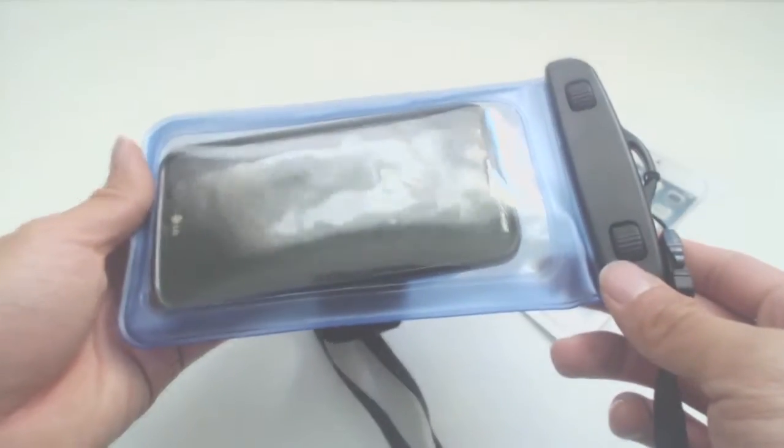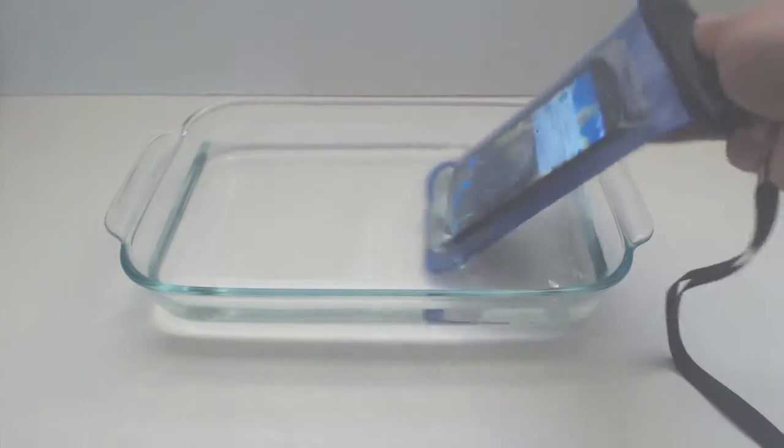Always test the unit without a device in it first to determine if the bag has any leaks. Once you've verified that it's watertight, you can use your phone in and around water without it getting wet.